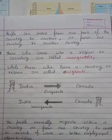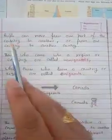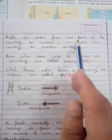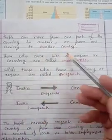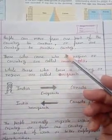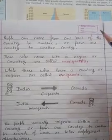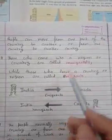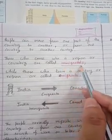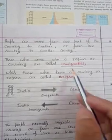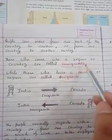After discussing birth rate, death rate, migration, and natural growth, we will discuss more on migration. People can move from one part of the country to another, or from one country to another country. There are two important terms: immigration and emigration, and the people involved are called immigrants and emigrants.